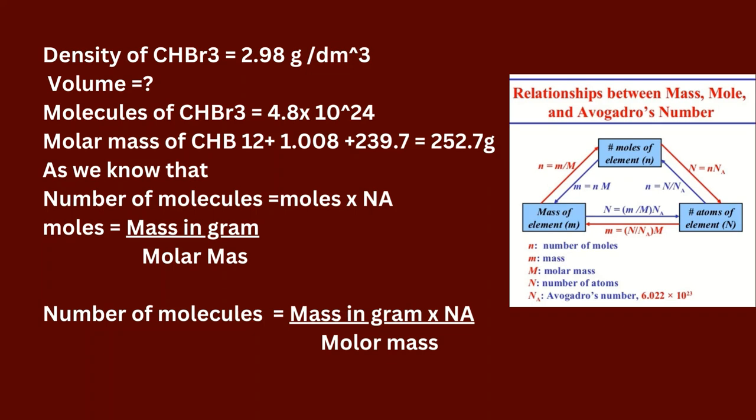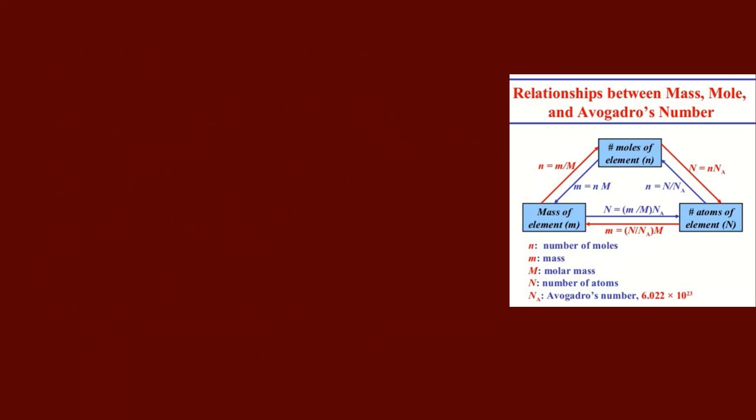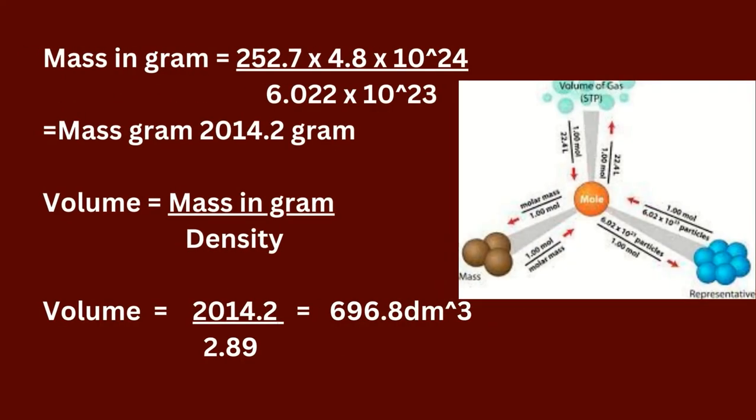Number of molecules = moles × Avogadro's number. Moles = mass in grams ÷ molar mass. Therefore, number of molecules = (mass in grams × Avogadro's number) ÷ molar mass. Mass in grams = (252.7 × 4.8 × 10²⁴) ÷ (6.022 × 10²³) = 2014.2 grams. As we know, volume = mass in grams ÷ density.